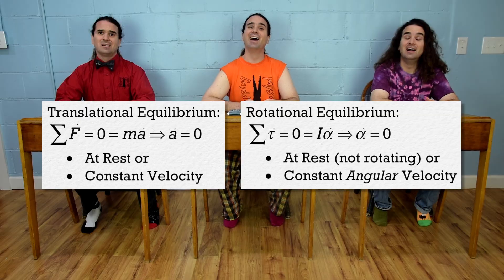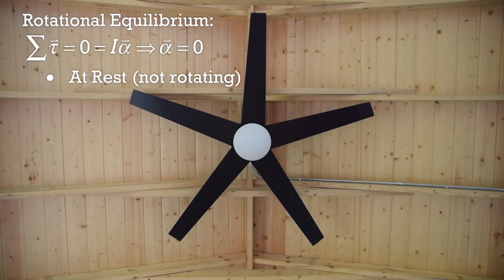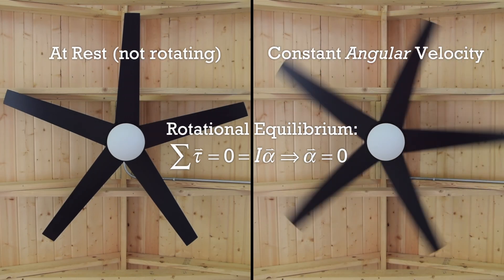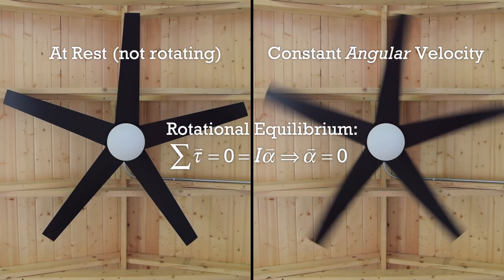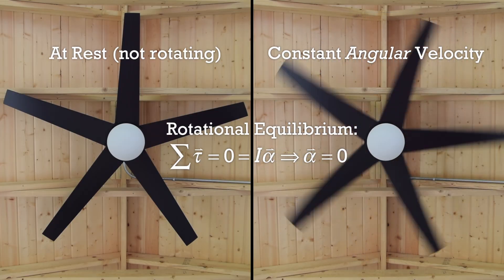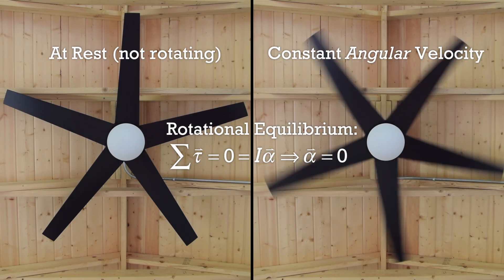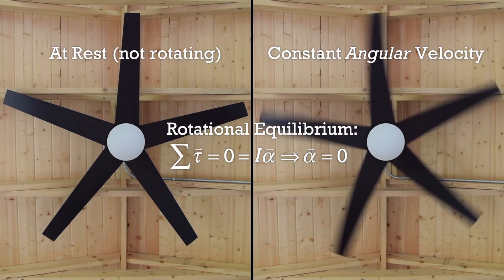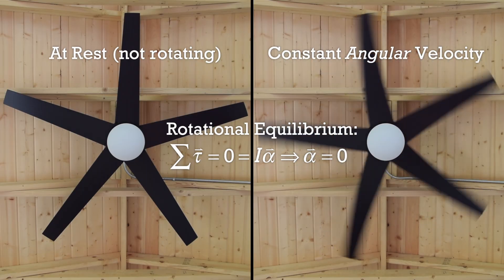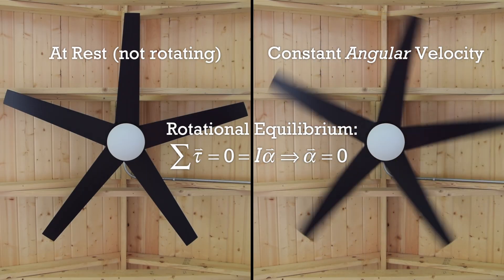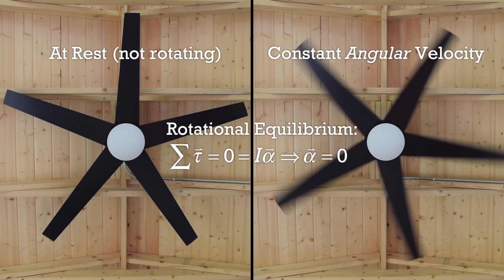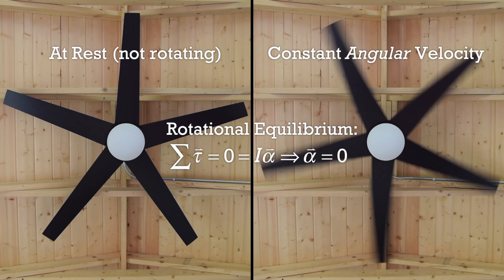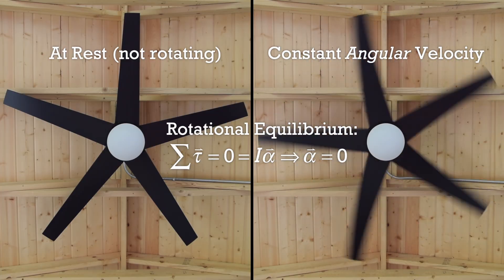Again, let's visualize that. This is a ceiling fan which is at rest. Currently, there is zero torque acting on the fan, so the fan has zero angular acceleration, is at rest, and is in rotational equilibrium. If we look at the fan when it is rotating at a constant angular velocity, there is a constant torque caused by the motor of the ceiling fan, and a constant torque in the opposite direction caused by the internal friction in the fan and the air resistance on the fan blades. However, the net torque acting on the fan is still zero. Therefore, the angular acceleration of the fan equals zero, and the fan is rotating at a constant angular velocity and is in rotational equilibrium.